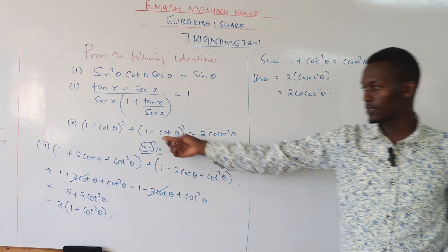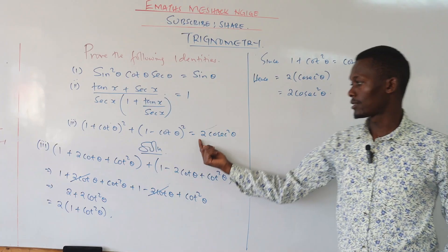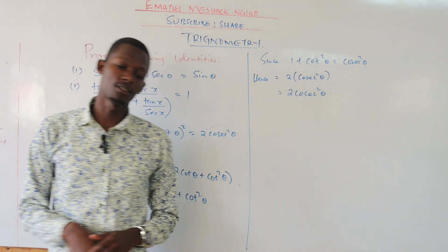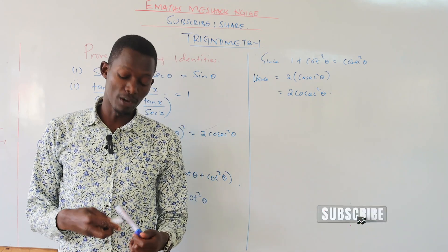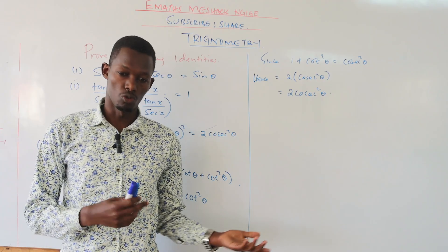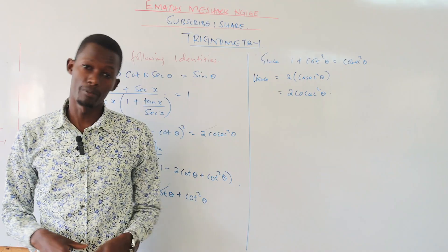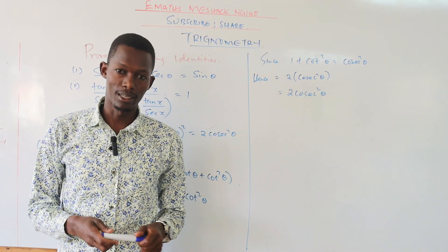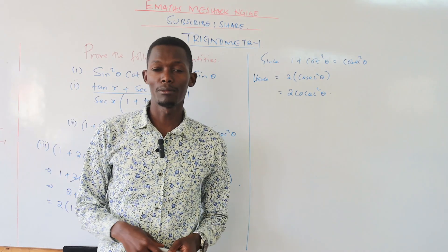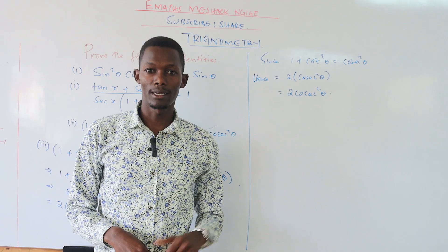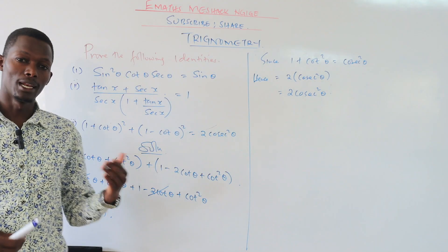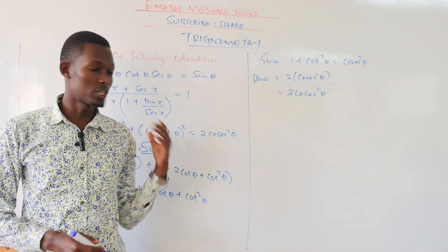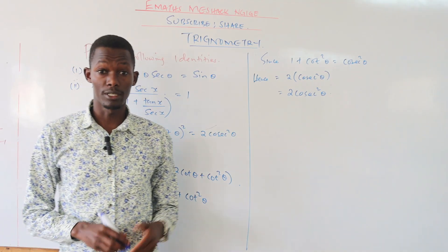We have proven that the expansion of this gives us two cosec squared theta. When it comes to proving trigonometric identities, you have the question and the answer in the same place — it is upon you to apply your knowledge of trigonometric identities to prove what you've been given. There is no particular formula; it is just knowledge of trigonometric identities. Kindly try as many examples as possible and keep watching, as we will be checking questions from NECO past papers. We shall now check something else called the compound angle identities.